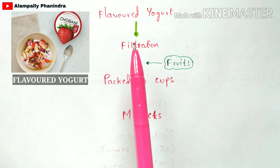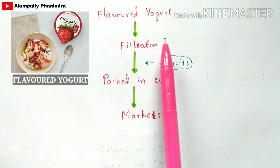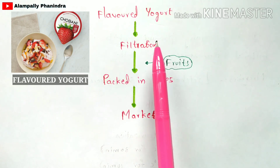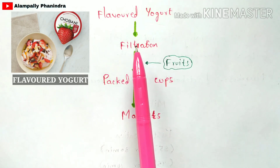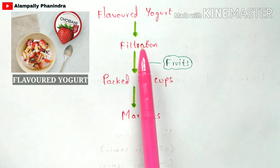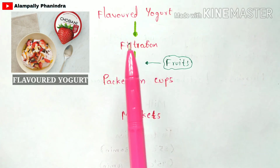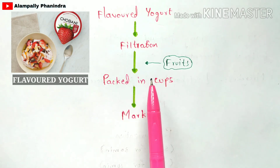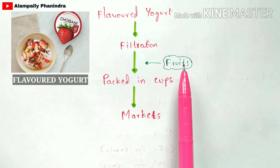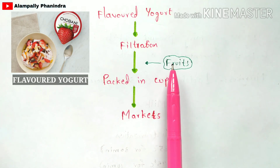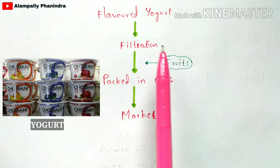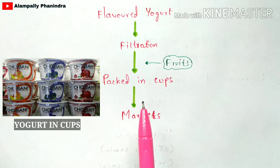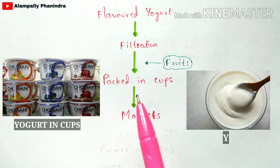The flavored yogurt is then filtered to remove any minute dust particles that may have been introduced during the fermentation or production process. After filtration, the flavored yogurt is packed into cups. Before packing, fruits are added at the bottom of the cups, and then the yogurt is placed on top. These cups are then supplied to markets for consumers.